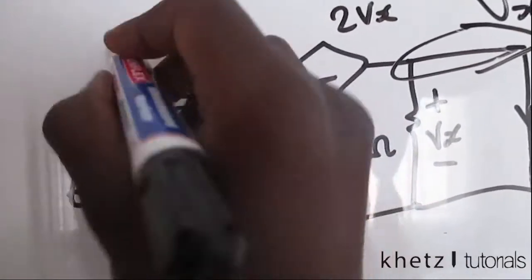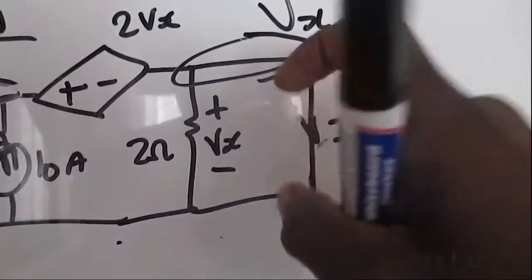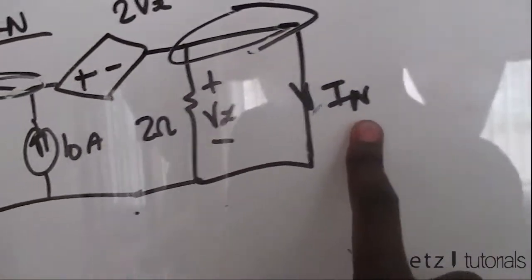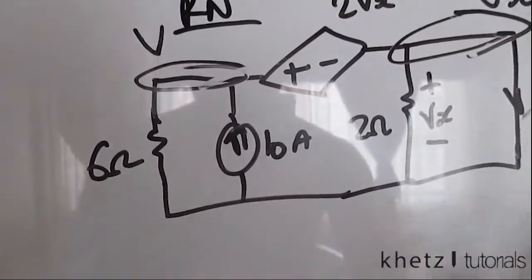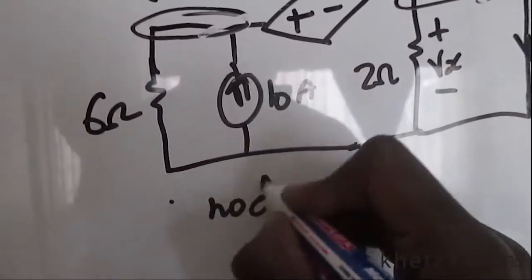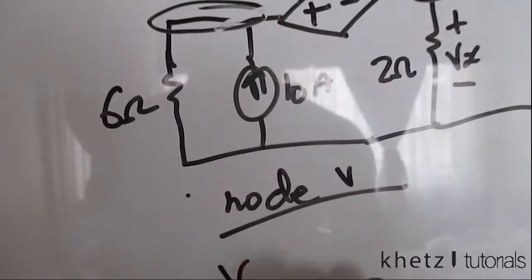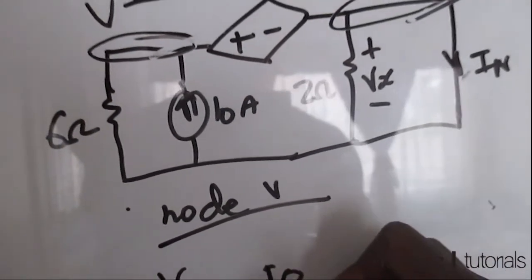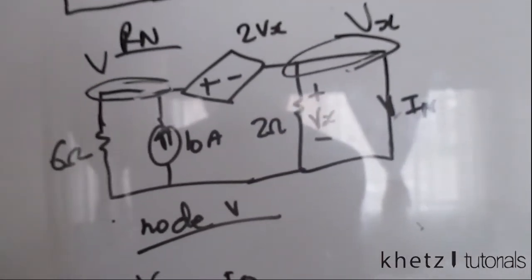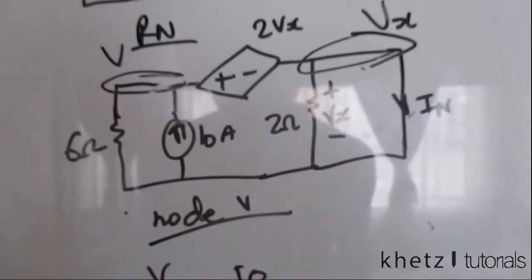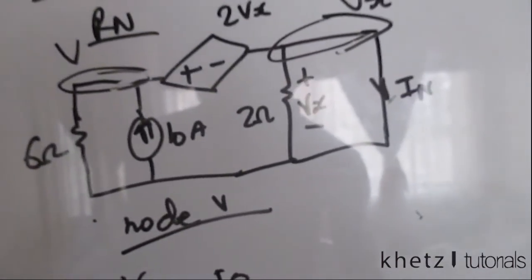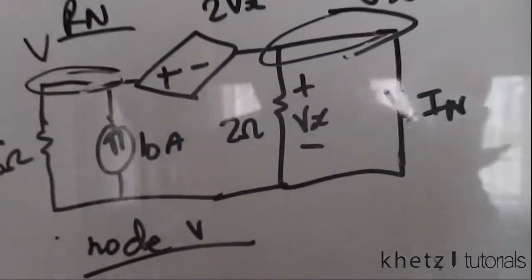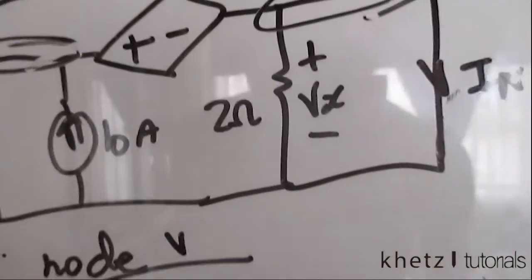Let's use nodal analysis to find this. Let's call this V, and this is Vx because we have Vx indicated over that point, and this is In. Let's do nodal analysis at node V. Looking at node V, we're going to have V divided by six, we're going to have negative 10. Now what you'll notice before we go anywhere is that we actually have a super node. But before we do super node analysis or nodal analysis...